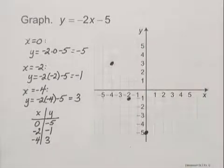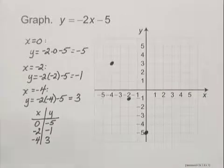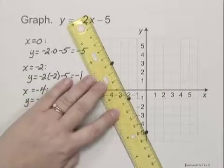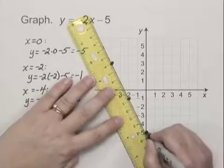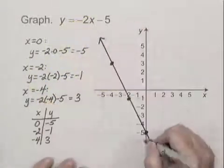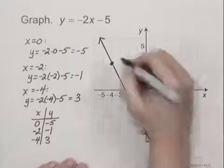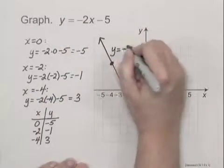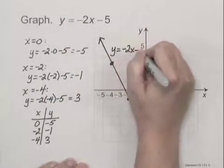Since we have 3 points and they line up on a straight line, we are pretty confident we have the correct graph. And we draw the line. The arrows at the end indicate that it extends indefinitely, and we label it y equals negative 2x minus 5.